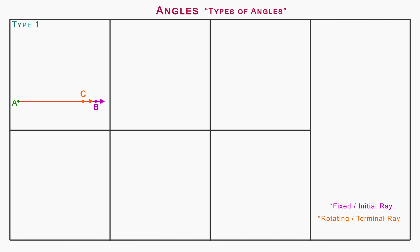Type 1: Zero angle. On keeping the two rays upon each other as shown on the screen, the angle is zero angle. An angle of zero degrees is called a zero angle.